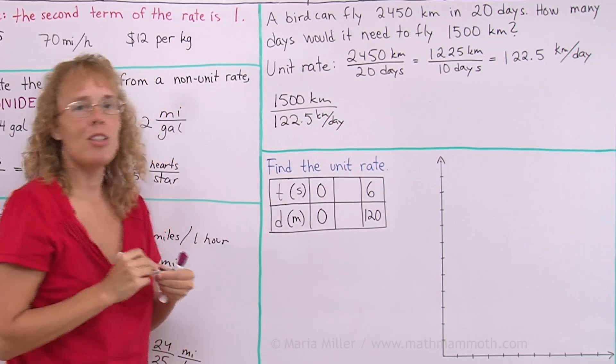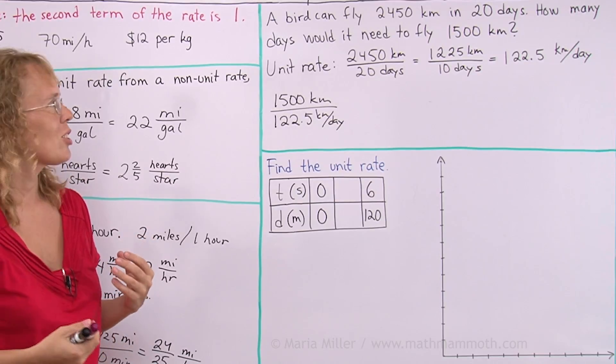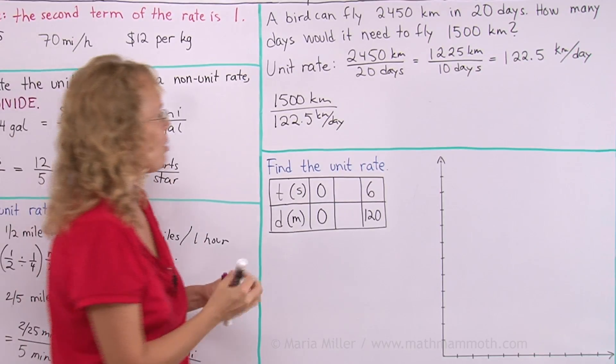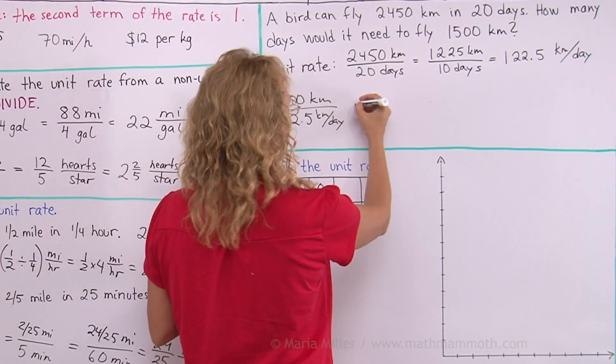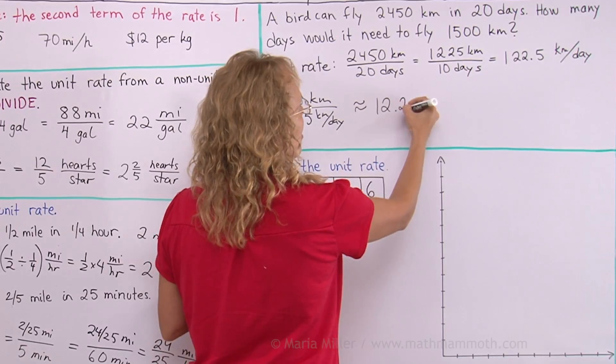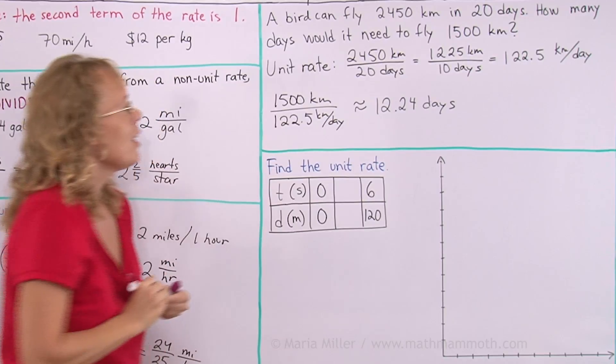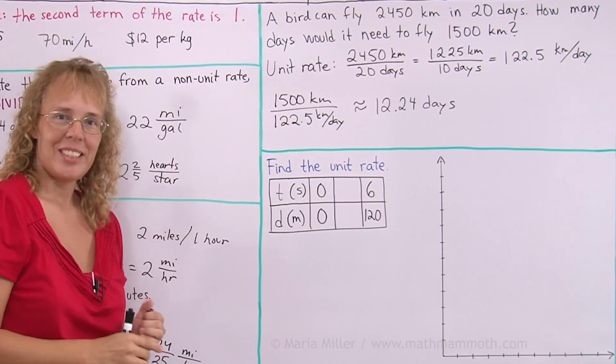1500 kilometers divided by that unit rate. And if you're not sure what to do, if you're not sure that maybe I should multiply those numbers, you also notice that multiplication gives you too big of an answer. So we divide this. And I did. And the answer is about 12.24 days. About 12 and one fourth days.